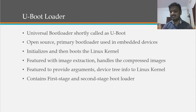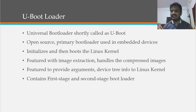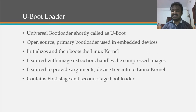U-Boot supports various processor architectures such as ARM, MIPS, SH, PowerPC, AVR, DaVinci, Blackfin, and Microblaze. It has universally become the bootloader for embedded systems, basically initializing and booting the Linux kernel.